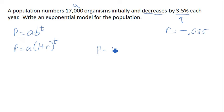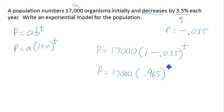So our population is going to look like A, that's the 17,000, times 1 plus our growth rate. So in this case, that'd be 1 minus 0.035 to the t, which we could also simplify down and write as 0.965 to the t. And there is our exponential model for this population.